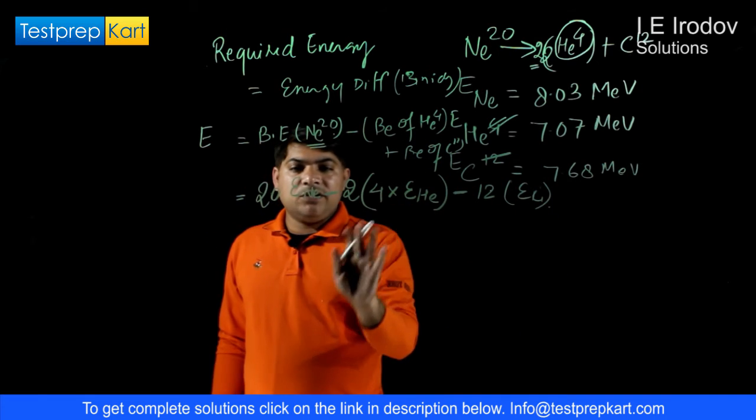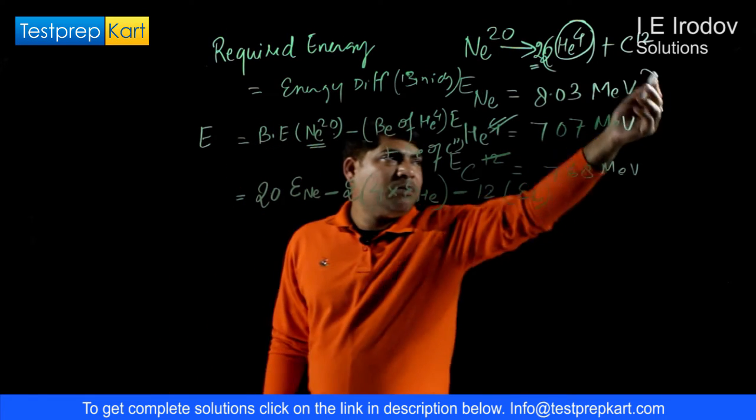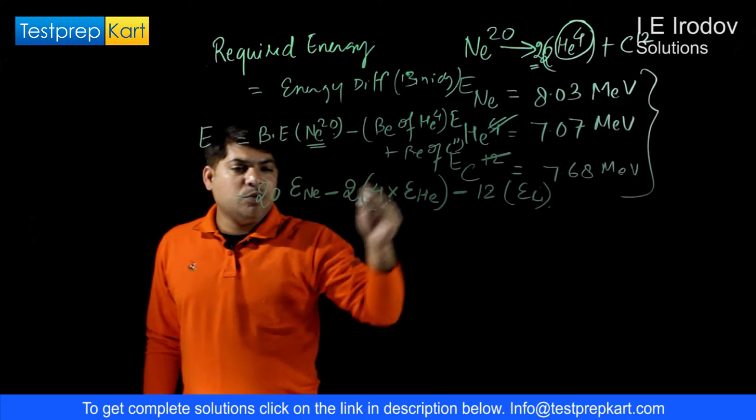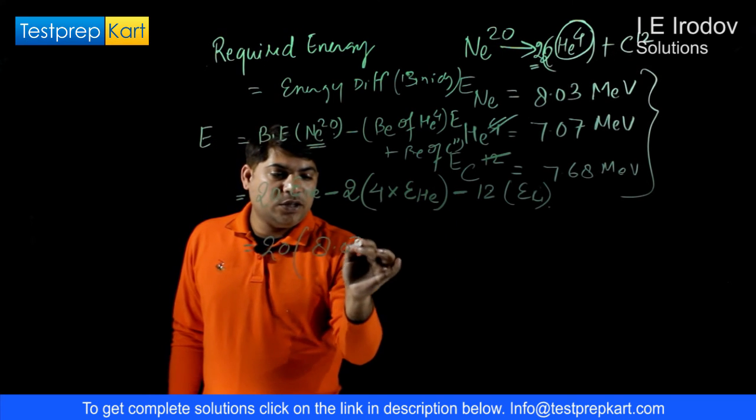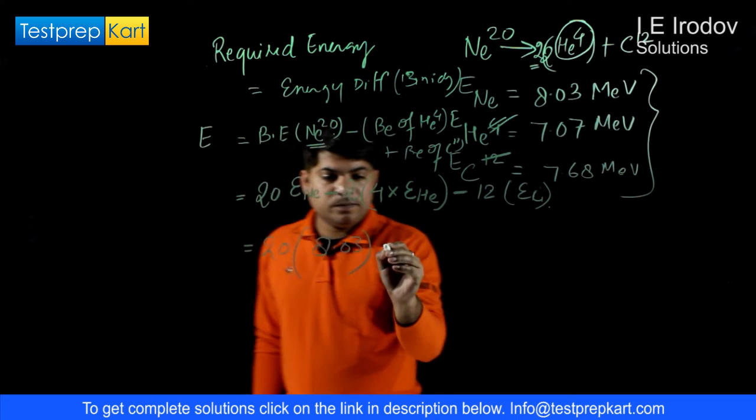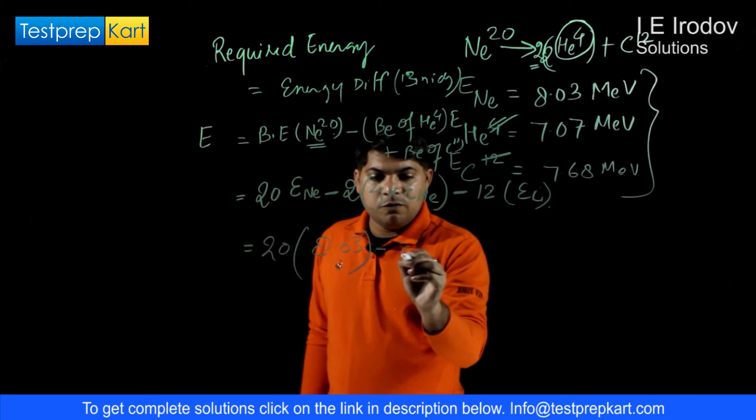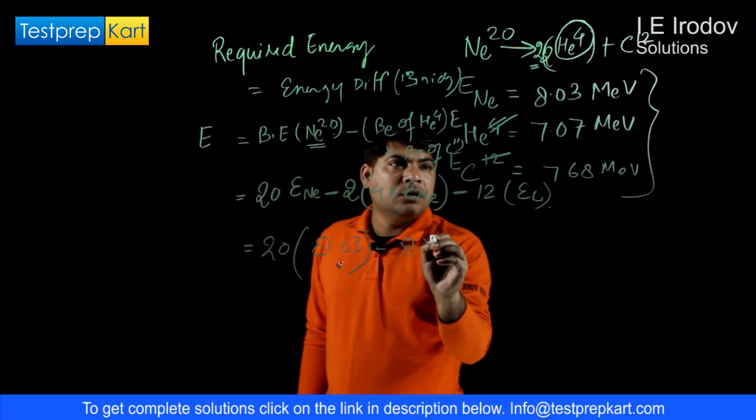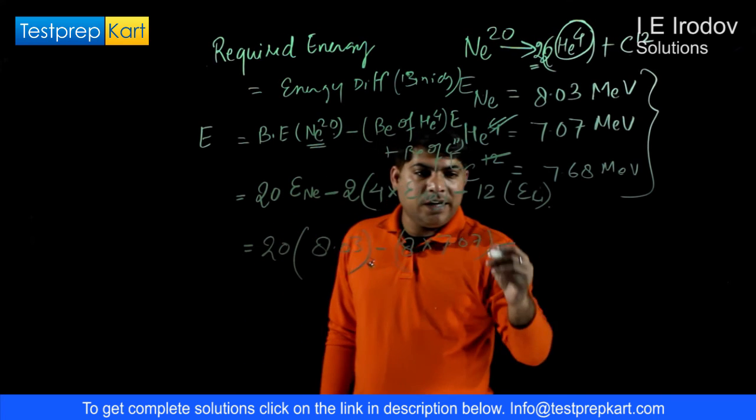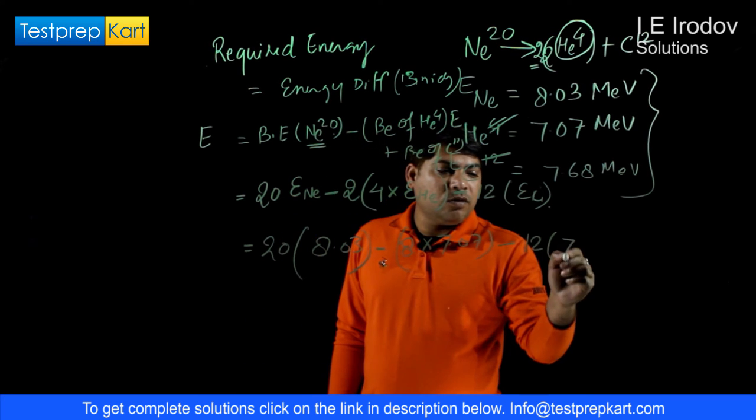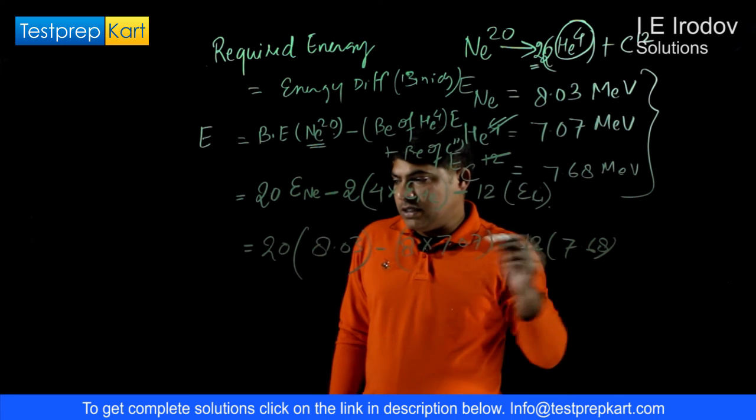Now we can substitute these values and units are the same, so no need to put extra effort here. We can write 20 into 8.03 for Neon minus 2 into 4 into 7.07 minus 12 into 7.68.